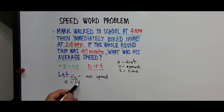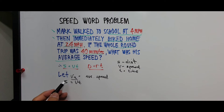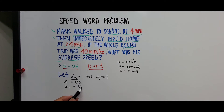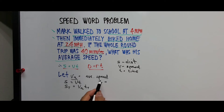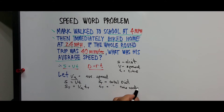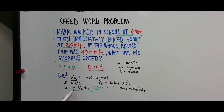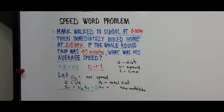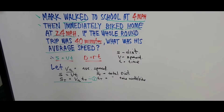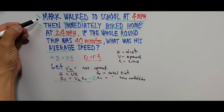Since we're looking for average speed, we need total distance equals average speed times total time. S_total equals V_A times T_total. That is our first equation. The total distance and total time cover both walking and biking combined.